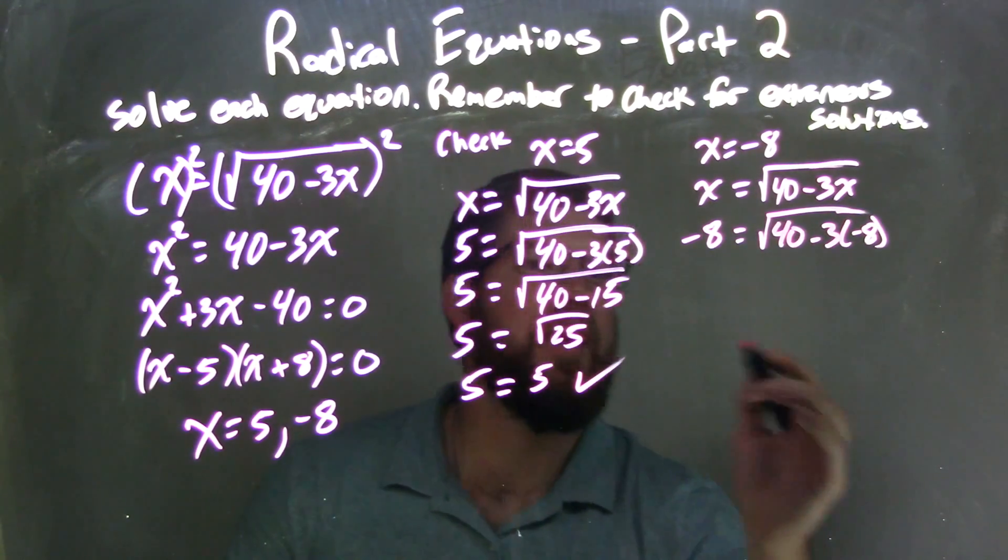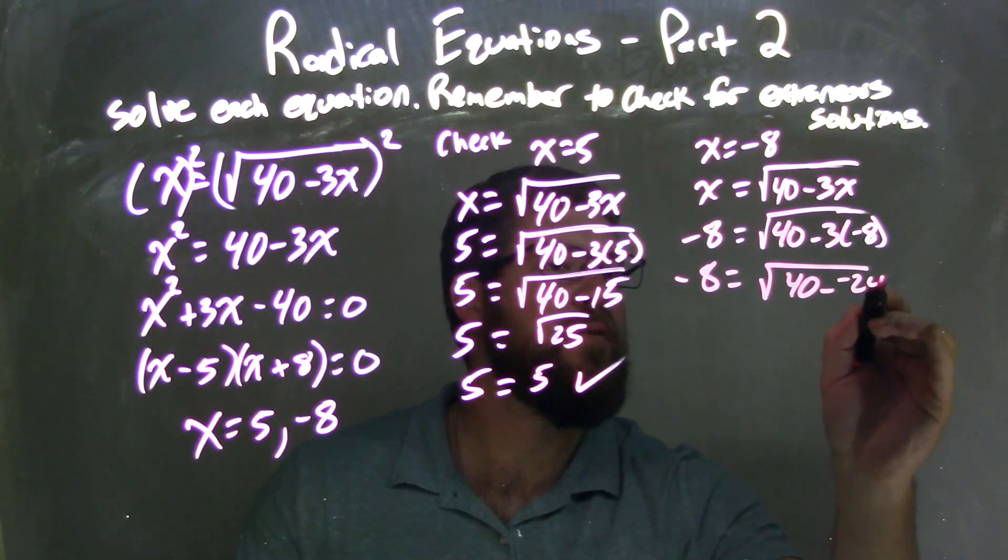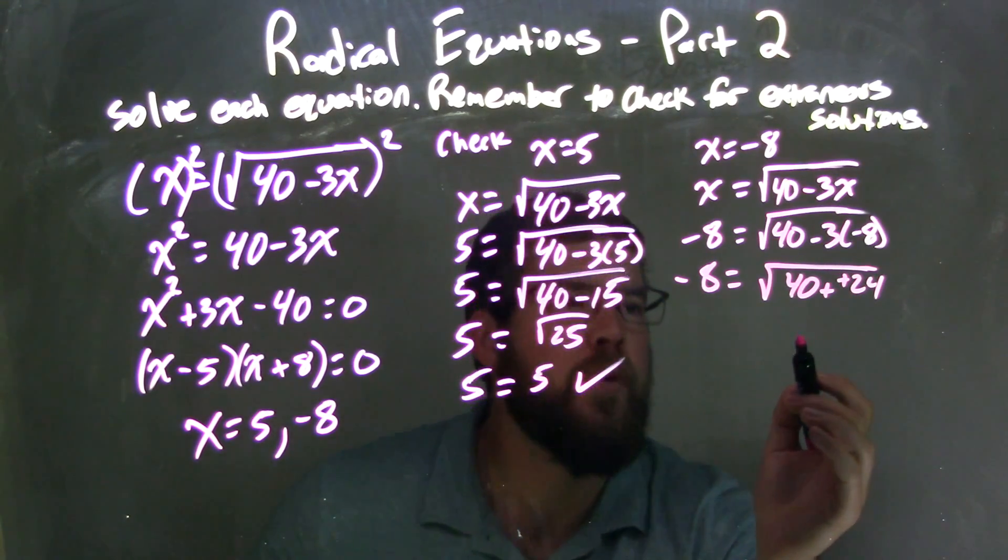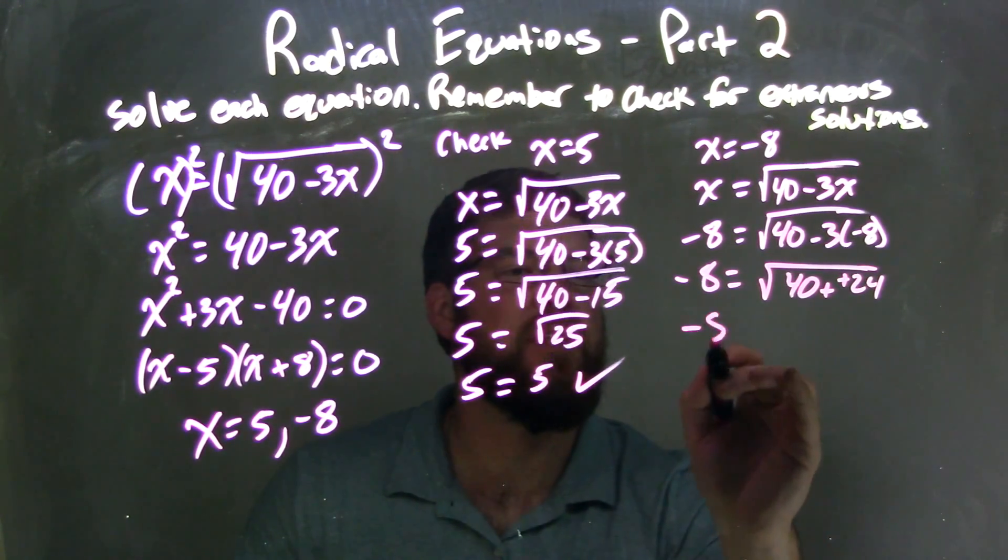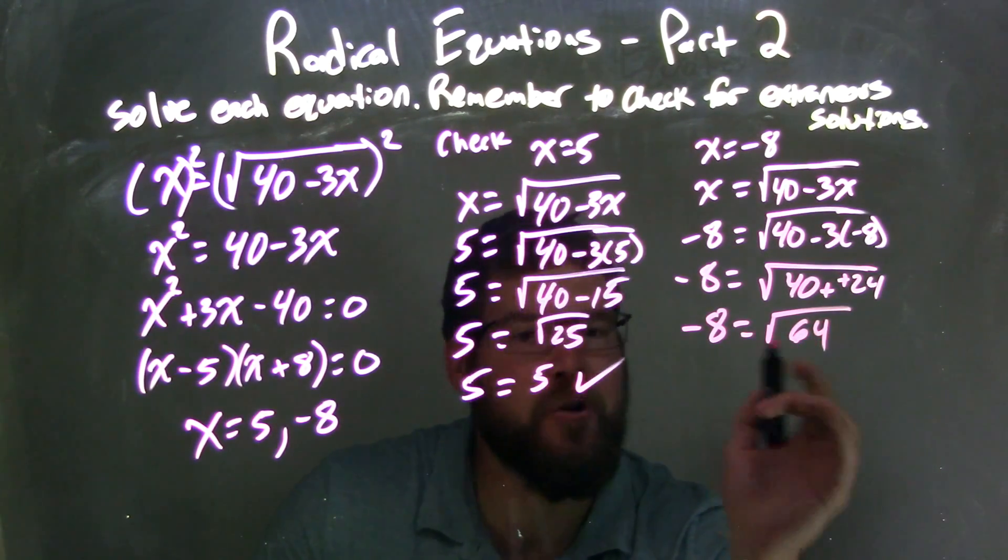3 times negative 8 is negative 24, so we have 40 minus negative 24. Subtracting a negative is the same as adding a positive, so we have 40 plus 24, which is 64. We have negative 8 equals the square root of 64. The square root of 64 is positive 8.